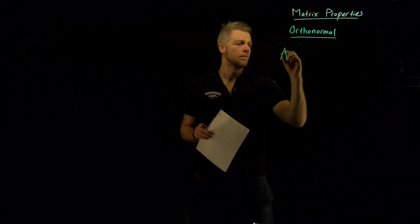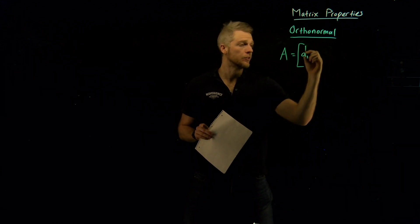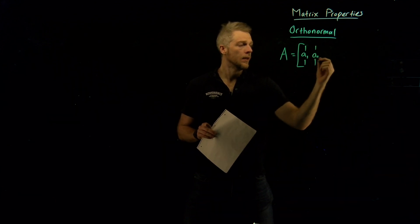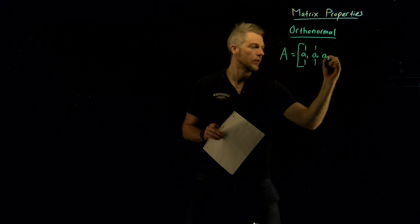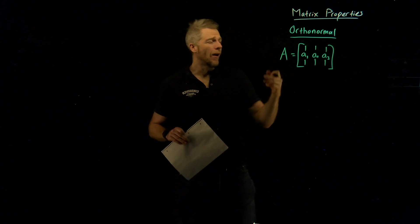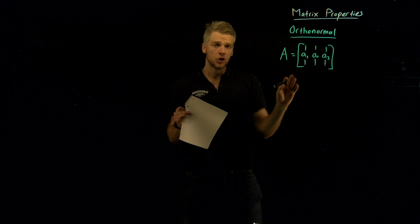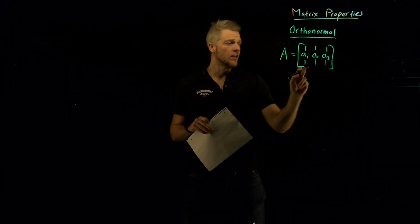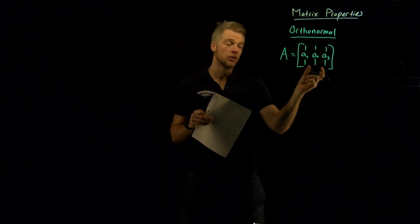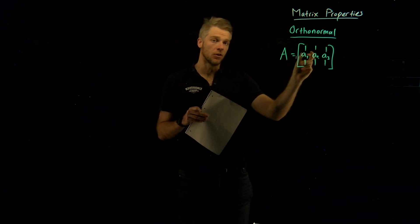Let's say we have some matrix A, comprised of a couple of column vectors. The first column vector I'll call A1, the next A2, and let's make it three columns. Now how do we define an orthonormal matrix? In short, it's if the two-norm of each of these individual vectors happens to be equal to one, and if the dot product of all different combinations of them are equal to zero — in other words, vectors that aren't themselves when dotted with each other are orthogonal.